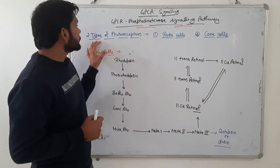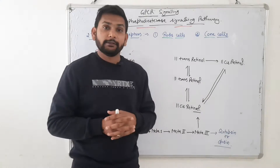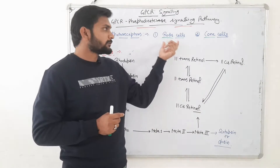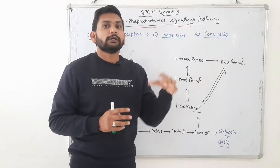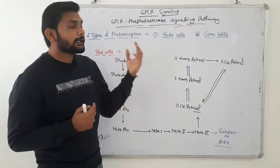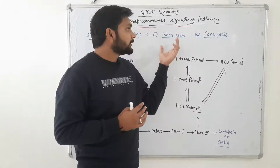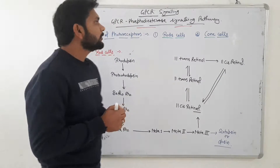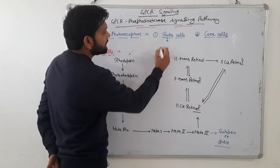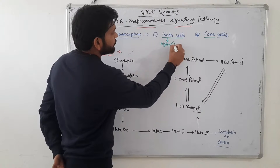There are two types of photoreceptors present in the retina of the eyes. The first is rod cells and the second is cone cells. Rod cells are activated at night, in dark situations.